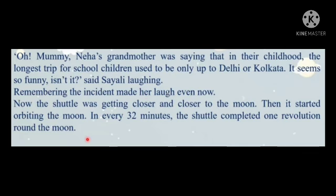The shuttle was gently getting closer and closer to the moon, then it started orbiting the moon. Orbiting means taking circles around it. Every 32 minutes the shuttle completed one revolution around the moon. So it was taking a round near the moon every 32 minutes. This word 'orbiting' you would have heard in geography.